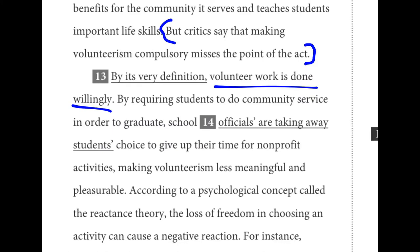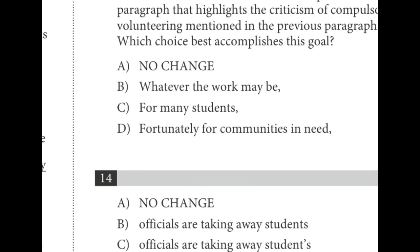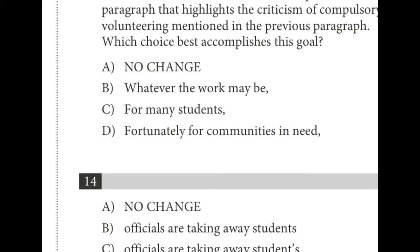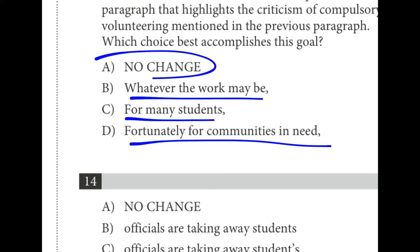Number thirteen: we want to contrast the idea that making volunteerism compulsory misses the point. We want to emphasize that it's volunteer and not compulsory. The only choice that does that is no change — A — because it emphasizes volunteer work and how it's done willingly. The other three choices emphasize other things like the work itself, the students, or the communities. A is the only one that emphasizes it's voluntary, showing that contrast.